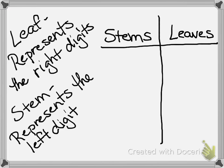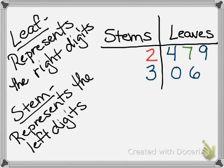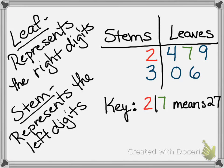To start off our stem and leaf plot, we're going to start with two columns — stem in one column, leaves in the other — kind of like a t-chart. We list our stems and then our leaves. In this stem and leaf plot, you can see that I've color coded it. Two on the stem side and seven on the leaf side means the number 27. That's how we read a stem and leaf plot.